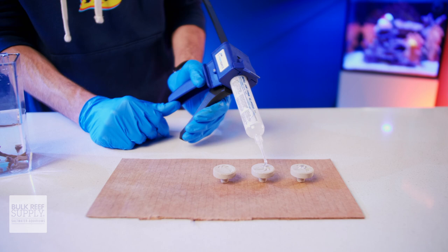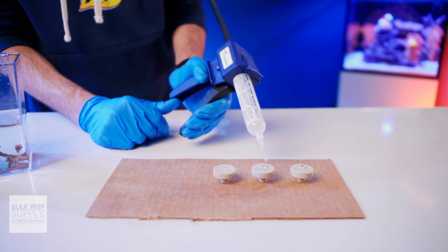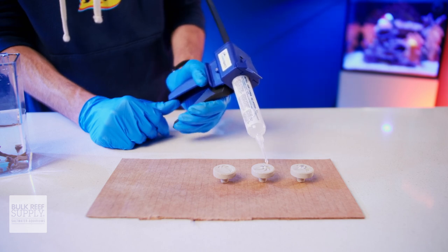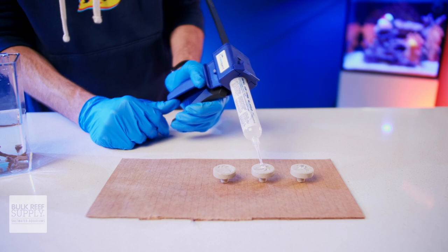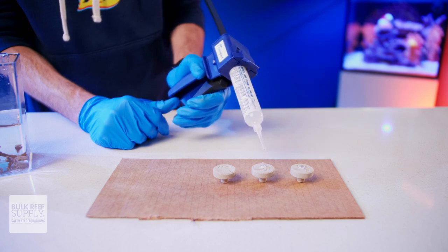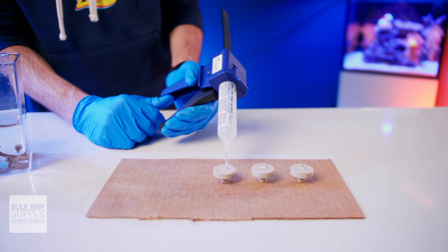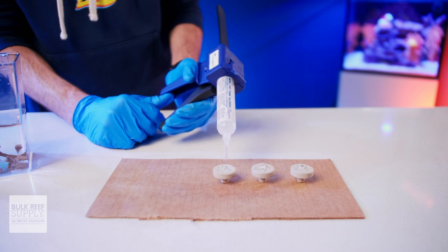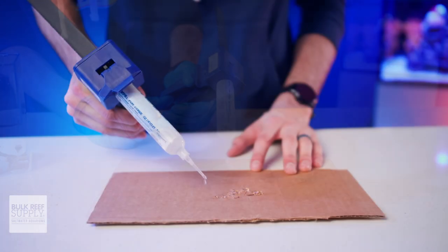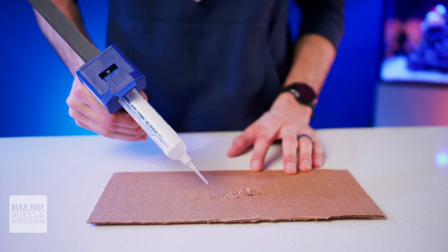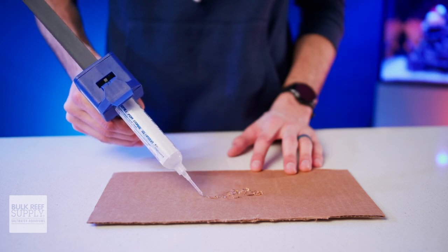Speaking of the glue flowing after you let go of the trigger, sometimes you're gonna get more glue than you need for a single frag plug, so having a few laid out and ready means you can move from one plug to the next if you've still got glue flowing and already have enough on the first plug. Alternatively, you should also have a piece of cardboard or a paper plate handy to rest the tip of the coral glue gun down on, so any extra glue coming out doesn't end up on your work surface.